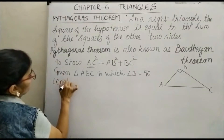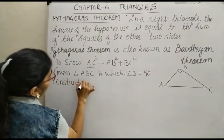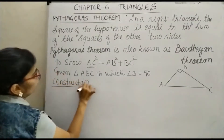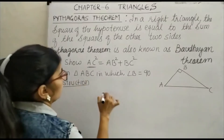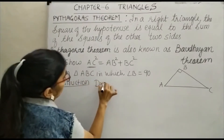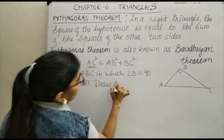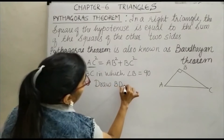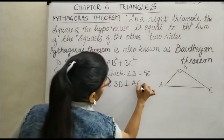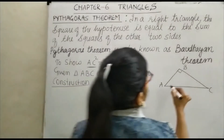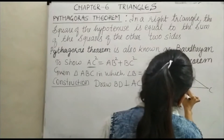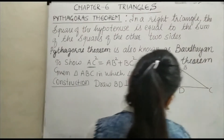Now let us see the construction. We will draw a perpendicular. Draw BD perpendicular to AC. This is your BD.